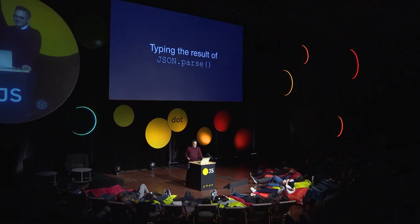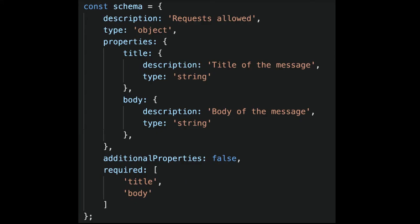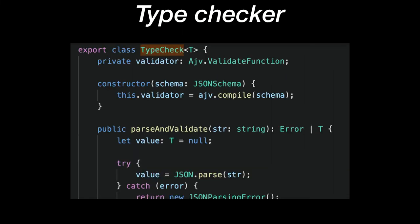Sometimes static verification is not enough and we need to resort to runtime checks. For example, if you're typing the result of a JSON parse operation, then assigning a type to the result is an educated guess. I found that using JSON schema can be very helpful — it's a bit verbose, but very helpful. On one hand, you can generate the TypeScript definition from the JSON schema, and on the other, you can use a type checker to validate the parsed results. We are now sure that the TypeScript definition matches exactly what we receive.